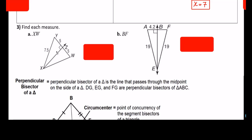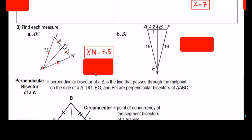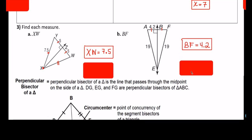Here I have this drawing, and I see a perpendicular bisector because I see the 90-degree angle and I also see that these two sides are the same — I see the 5 and 5. Because any point on the perpendicular bisector is equidistant, these two must be the same. Therefore, XW equals 7.5. On the next one, we're looking for BF, and I notice that these two are 19, so they're congruent, and I see a 90-degree angle. Therefore these two sides must be the same, and we can conclude BF equals 4.2.